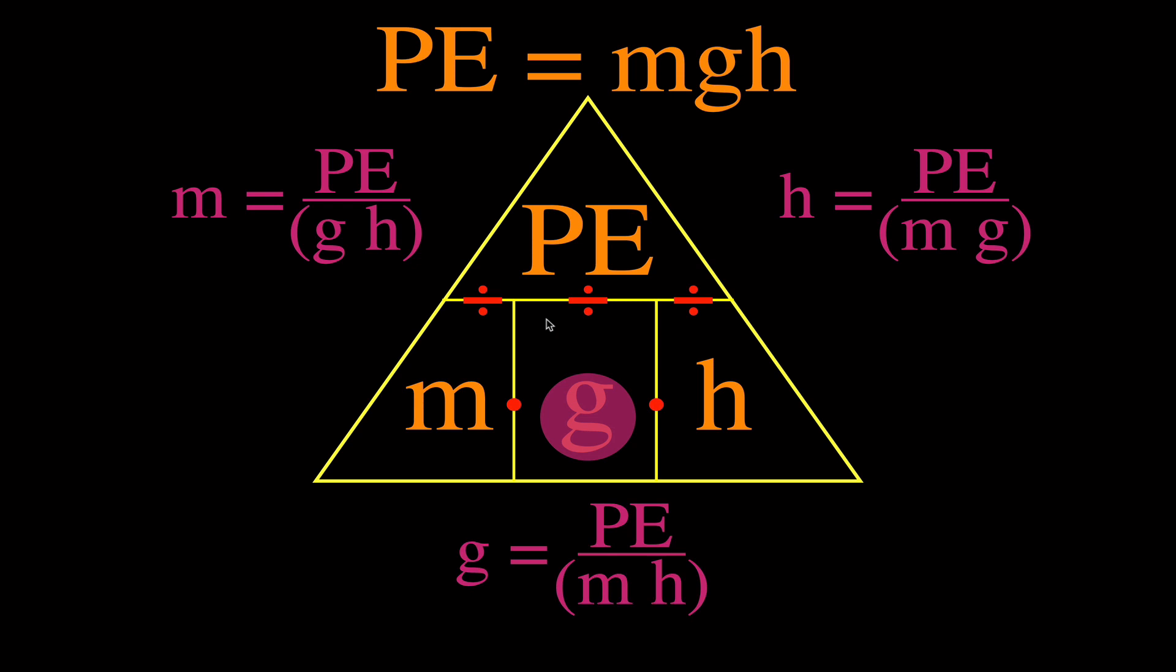Now the idea isn't that you're going to memorize this equation, this equation, this equation, and this equation. The idea is that your teacher will give you this equation, usually the base equation, and then you can use the magic math triangle or your own math abilities to solve for m, h, and g like that. But I find my students find this kind of triangle very helpful to come up with the other equations.